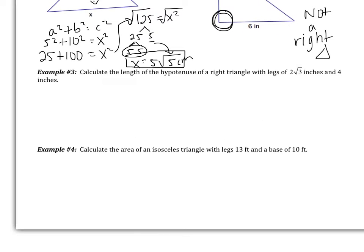We have two more examples on this page before moving on. Example 3 says: calculate the length of the hypotenuse of a right triangle with legs of 2 root 3 and 4 inches. I'm going to draw myself a right triangle. I'm calculating the hypotenuse, so I'll call that X. The legs are 2 root 3 and 4. Pause the video and try setting the problem up, please.